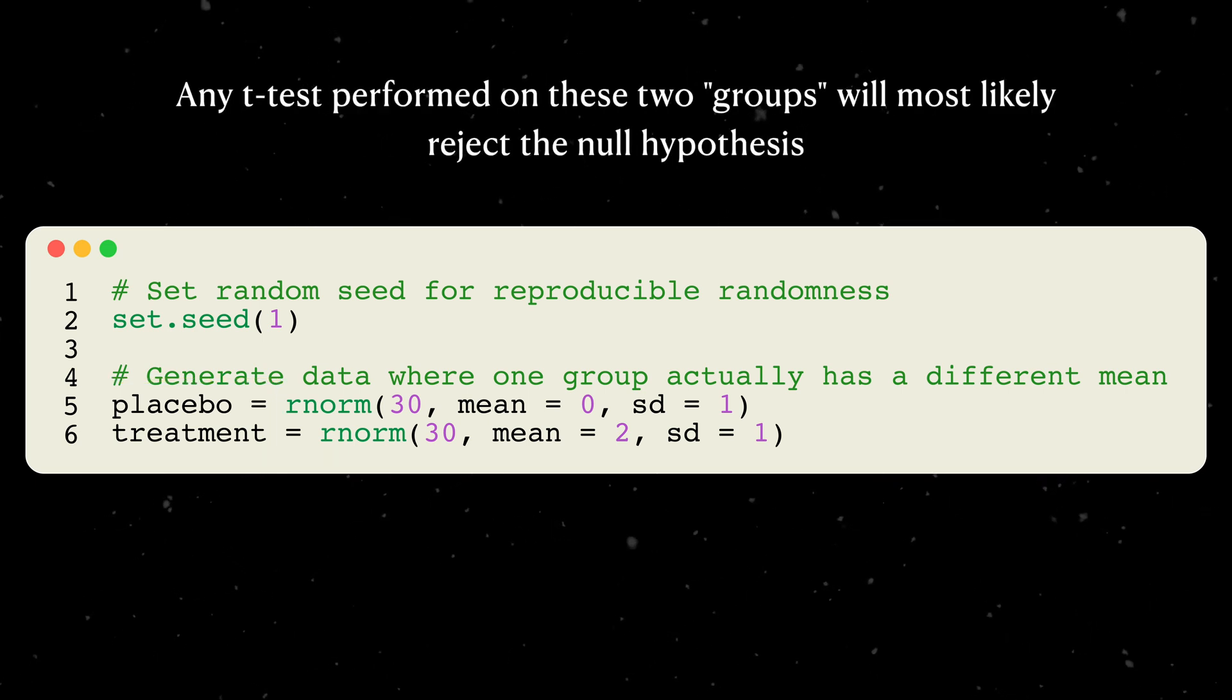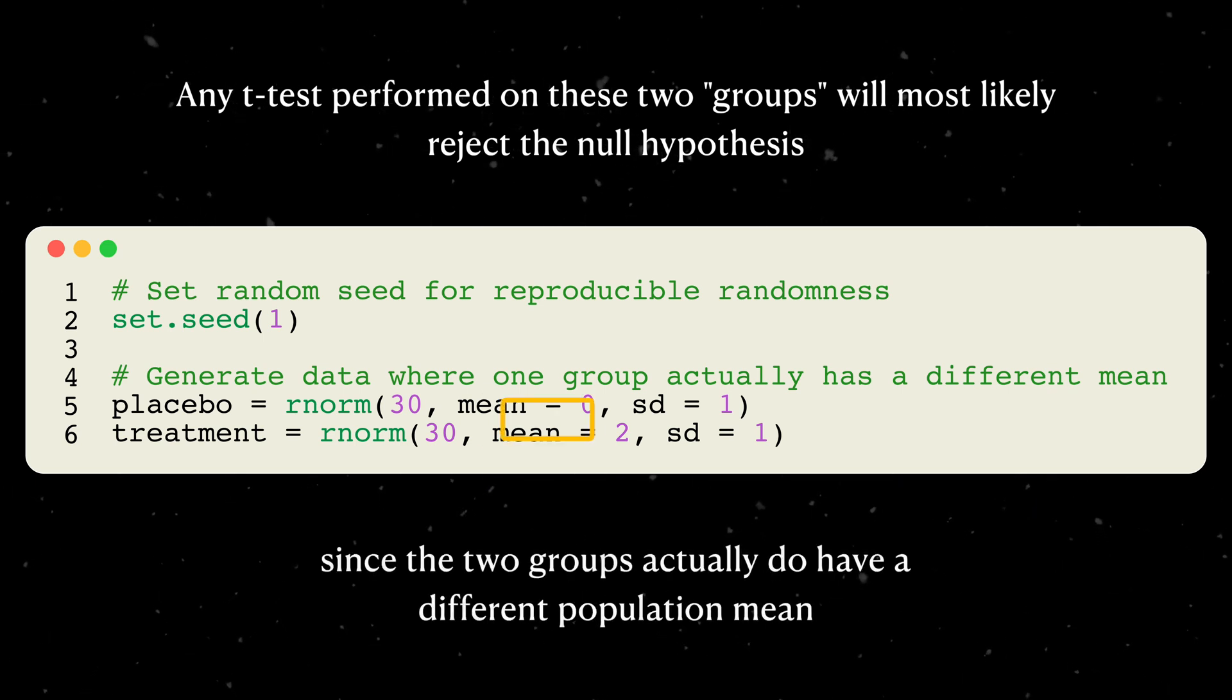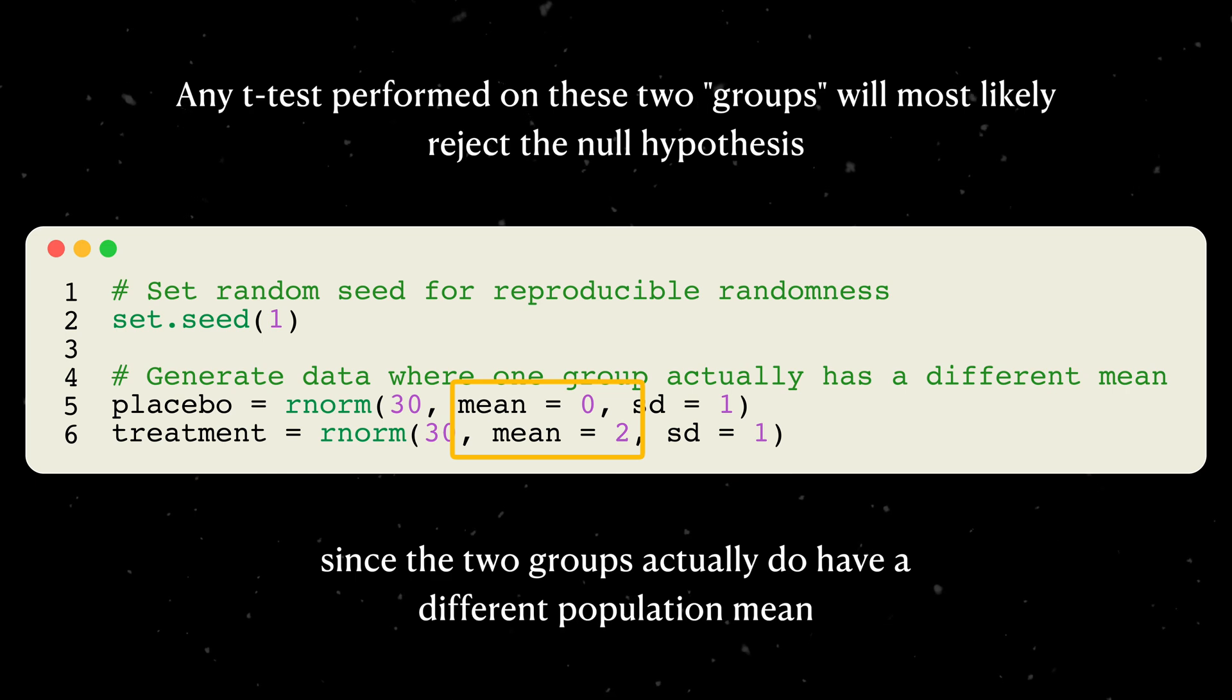Just by looking at how the data was generated, then we should expect the t-test to reject the null hypothesis, because they actually do have different population means.